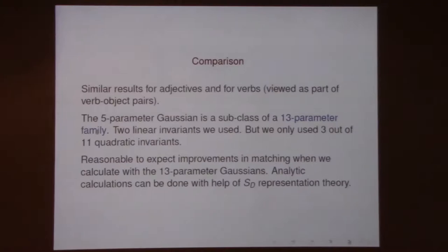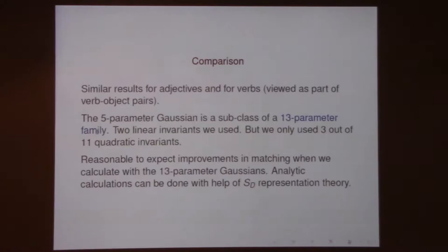You use similar things for adjectives and verbs. This means the robot will do the right thing about 60% of the time on the particular task of word similarity. From a mathematical physicist's point of view, this five-parameter Gaussian is actually a subclass of a full 13-parameter family of Gaussians. We used two linear invariants and put in three quadratic ones we could think of in the first instance.